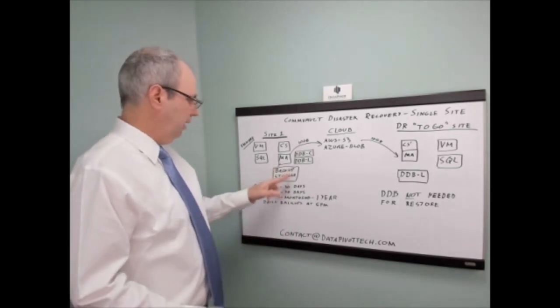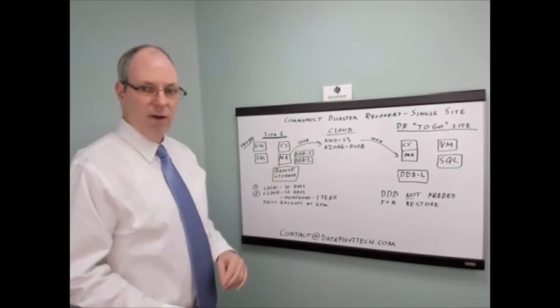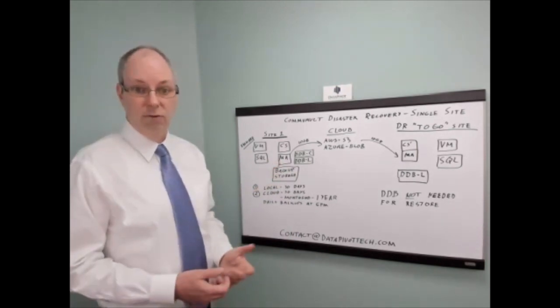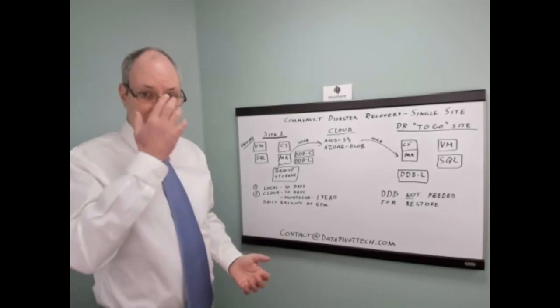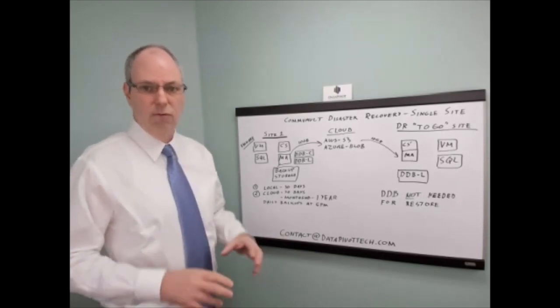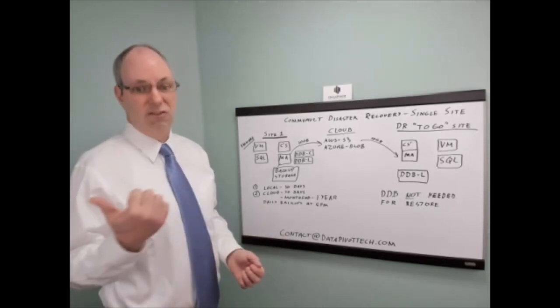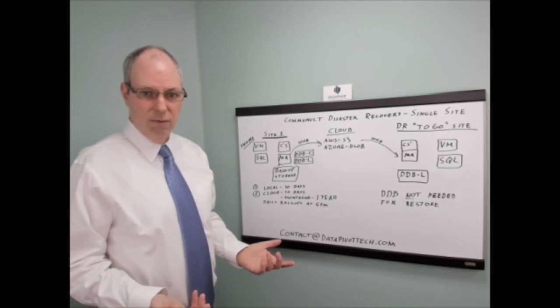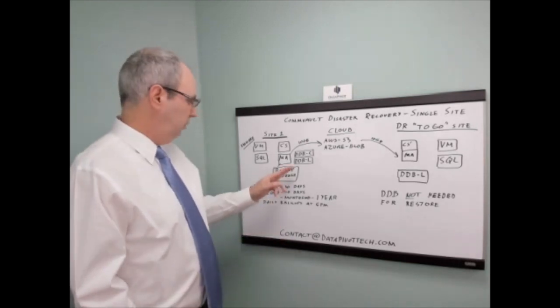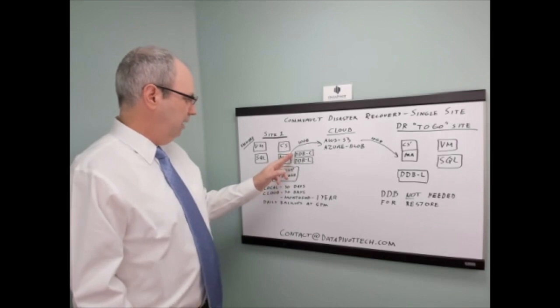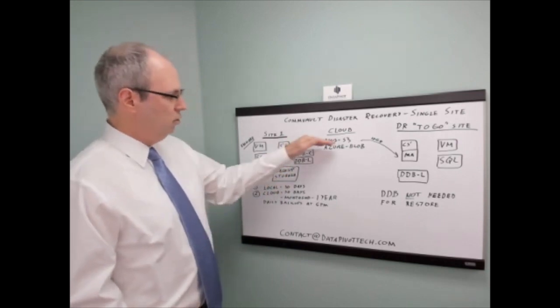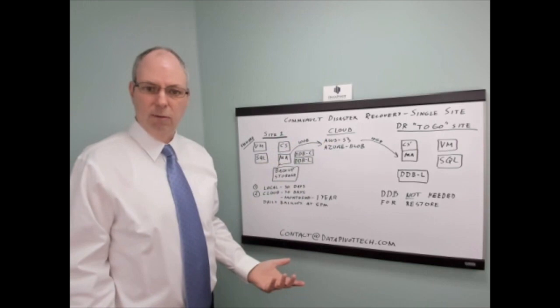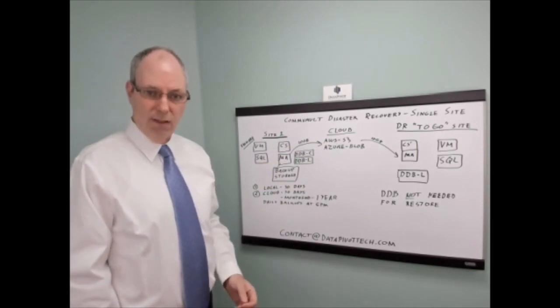Now, if I wanted to copy that 60 terabytes off-prem, some solutions don't have deduplication to the cloud. So the problem you run into is you have to rehydrate that data and send 60 terabytes. That's a lot of money to store up in the cloud, and it also slows you down because you're going to send it over the internet. So what we can do with Commvault is I'm going to take my data here, copy it here to my second DDB, and we're going to shoot it out to the cloud. So I'm going to send out six terabytes instead of 60. So we're going to save money, and it's going to be a lot faster.